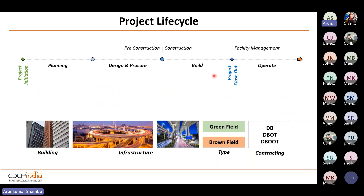In a linear way for today's discussion: we start with project initiation — somebody decides a project is required. The next phase is planning, then design — what exactly we want to build. Along with design, procurement happens — understanding how it can be built. Then construction converts design ideas into a physical product. At the end of construction is project closeout, where the project is returned to the owner who starts operating the building.